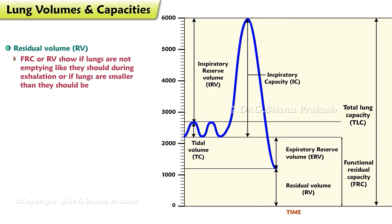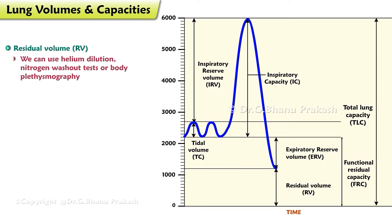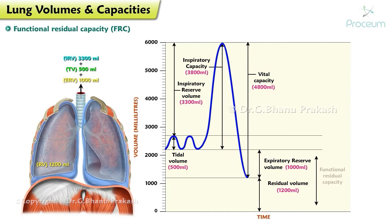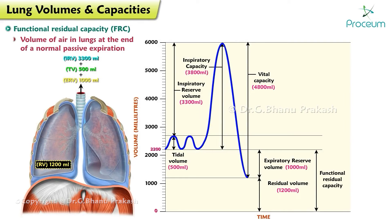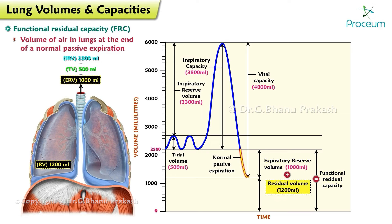The functional residual capacity or residual volume can show if the lungs are not emptying like they should during exhalation, or if the lungs are smaller than they should be. We can use helium dilution, nitrogen washout tests, or body plethysmography. Functional residual capacity: the volume of air in the lungs at the end of a normal passive expiration. Functional residual capacity is equal to expiratory reserve volume plus residual volume.